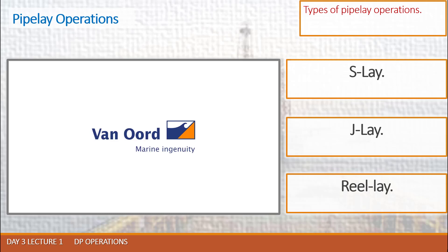The DPO must be provided with effective position reference at all times. Some surface and subsea references are not suitable due to the distances traveled by the vessel and the limited range available. Dual DGPS is a common facility, backed up by two taut wires.